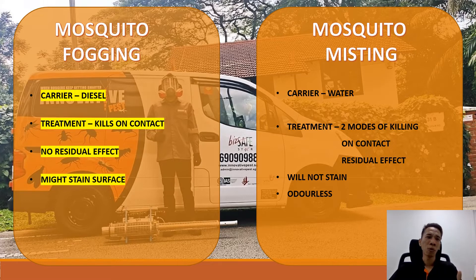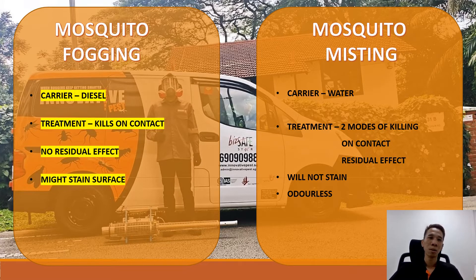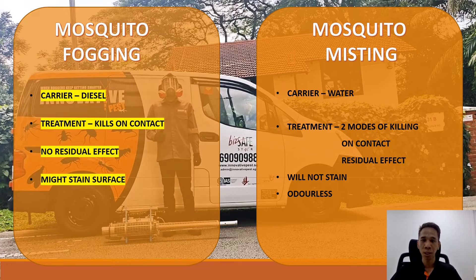For mosquito fogging, the carrier is diesel. For mosquito misting, the carrier is water. So when mosquito fogging is carried out, you can see thick smoke, which is diesel together with the preparation. As for mosquito misting, the carrier is water, so you don't see any smoke — basically just like mist.